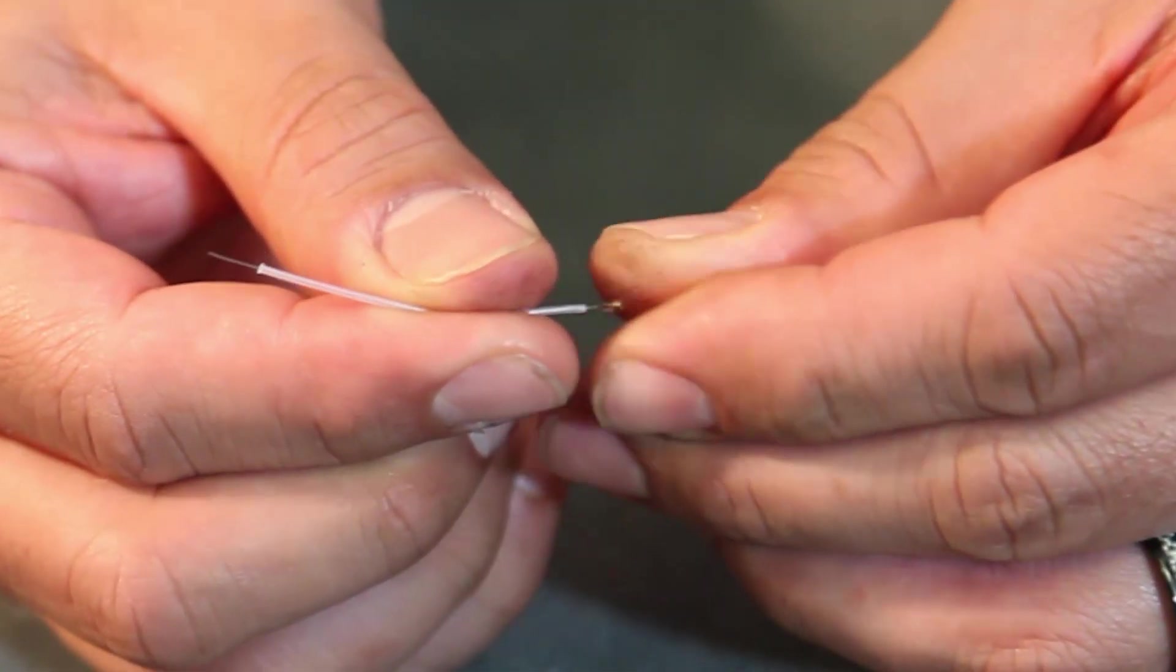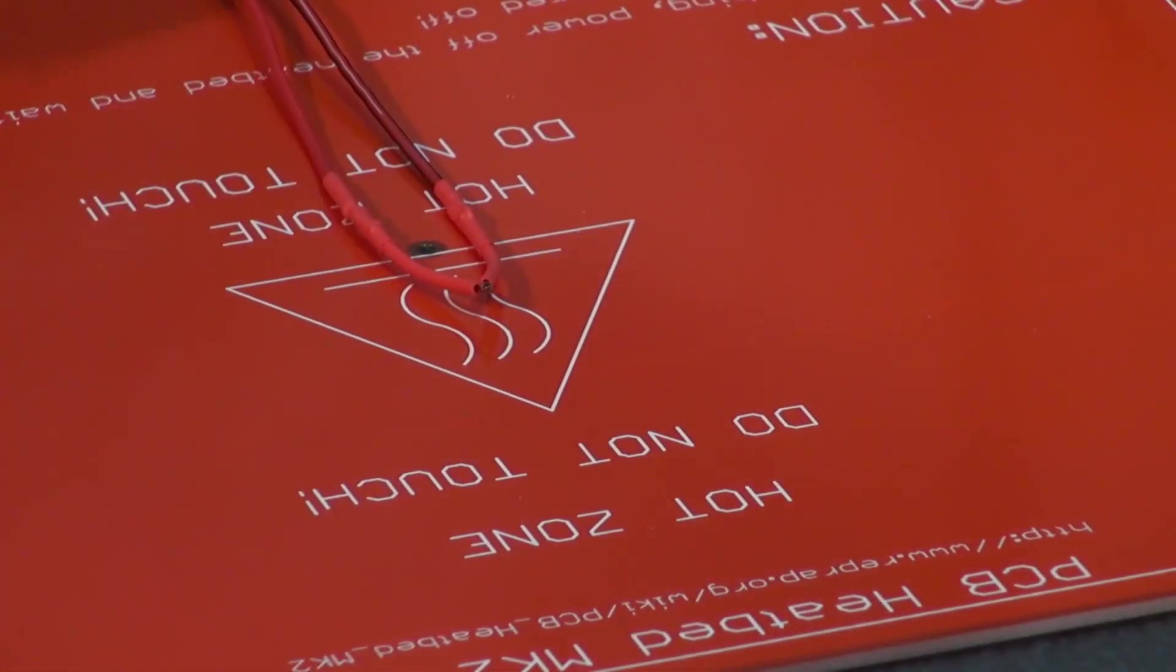Now we're going to solder the wire to our thermistor for our heat bed. You're going to utilize one of the connector wires that was provided: red and black with a connector.